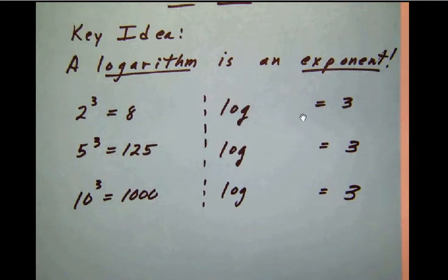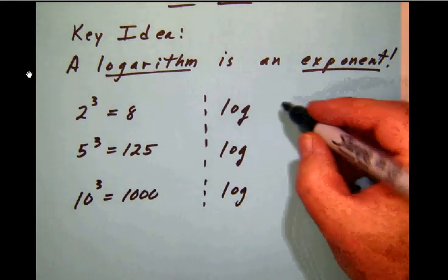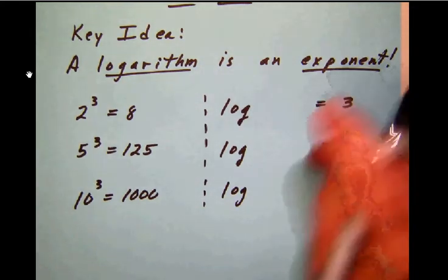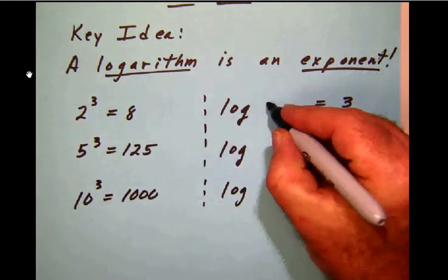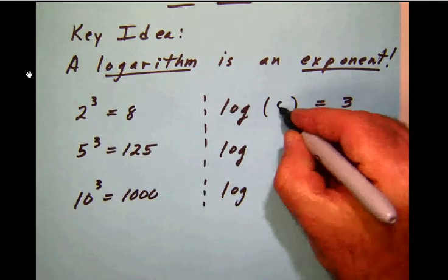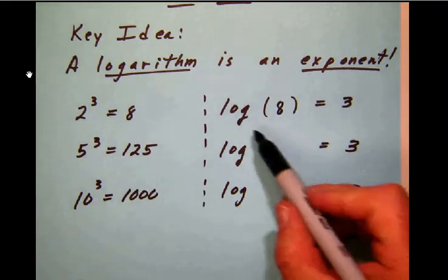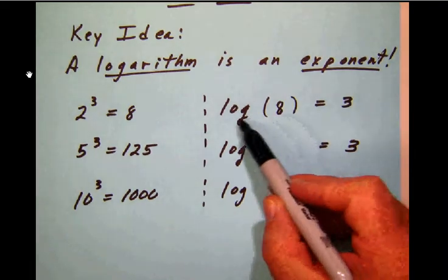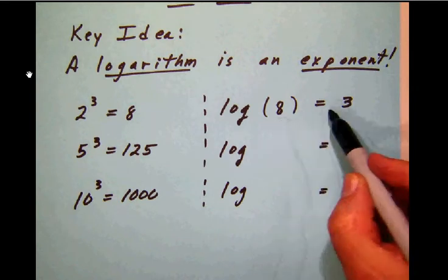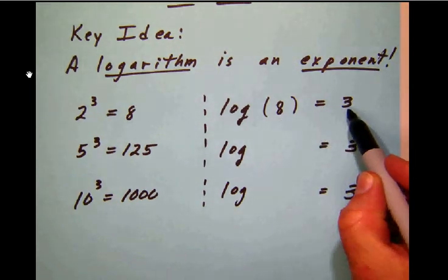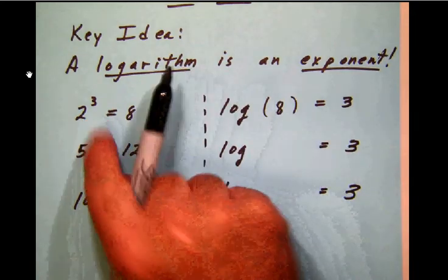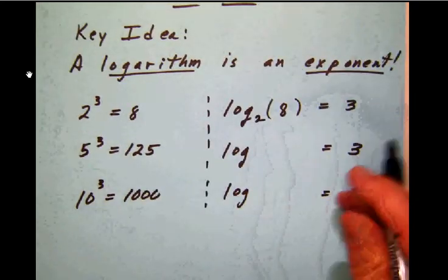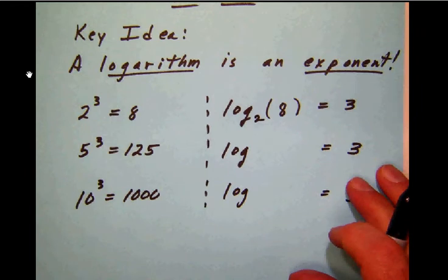But another way of thinking about this is a logarithm is a function. It's a function that we take of a particular number, in this case, 8. So we're going to use function notation here with parentheses, the logarithm of 8. The logarithmic function of 8 is 3. But as you might guess, we're going to have to specify the base here. So the logarithm to the base 2 of 8 is 3.